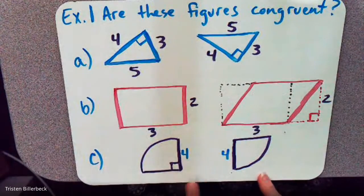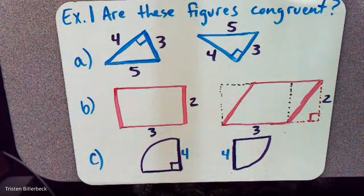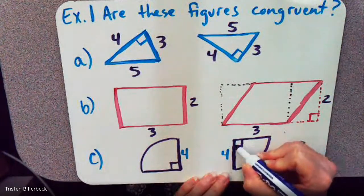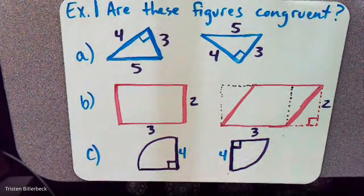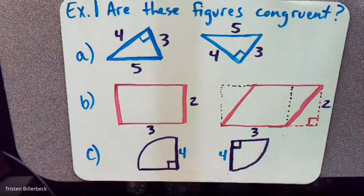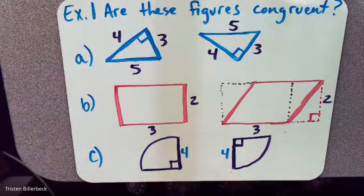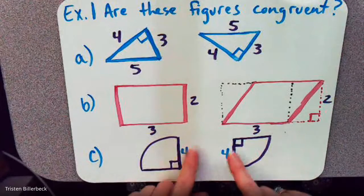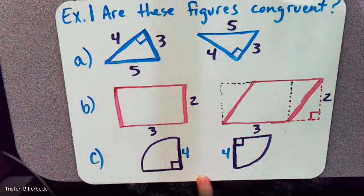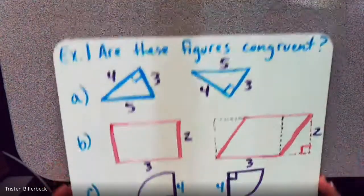These two objects have a right angle, and one side that's four — that's the radius — so that makes the other side four as well. In this case, this arc segment, or segment of a circle, is congruent to that segment. So these two are congruent.